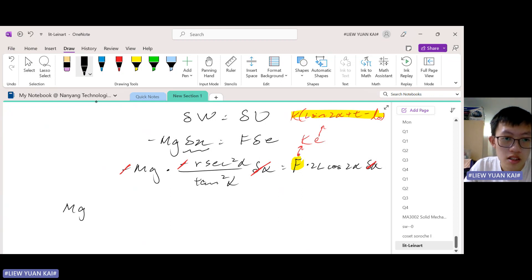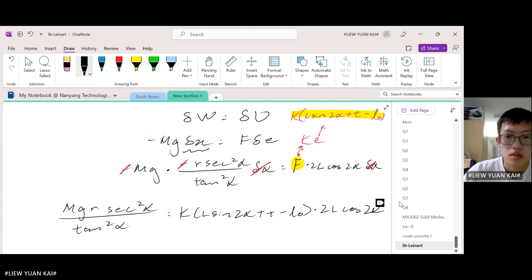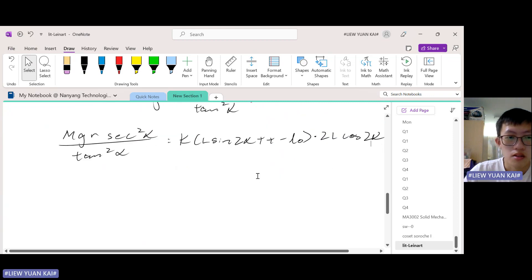So let's neaten this up a bit. So we have mg times, let's put this to top. MgR secant squared over tangent squared times 2 equals K times this whole thing.